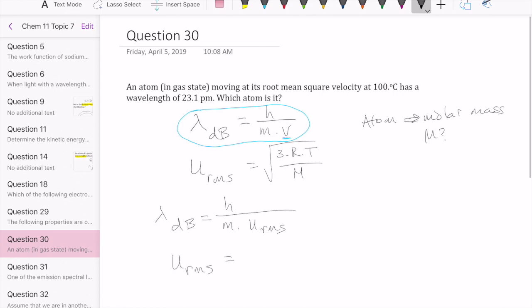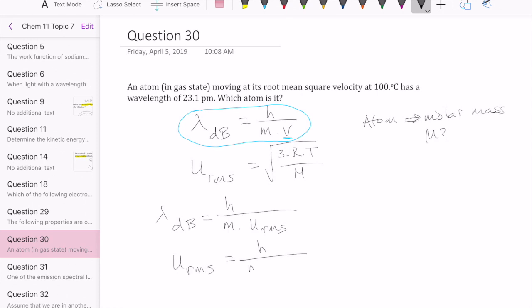And you can say that URMS should then equal to H over M times the de Broglie wavelength. But remember, in the other equation, URMS is also equal to square root of 3RT over M. One more thing we need to remember is M or molar mass is the same as the mass of one mole of a substance. Or in other words, the way we can write this is that it's the mass of one particle times Avogadro's number, the number of particles in one mole.